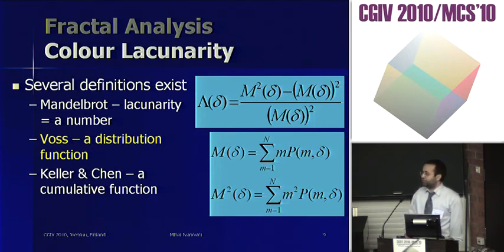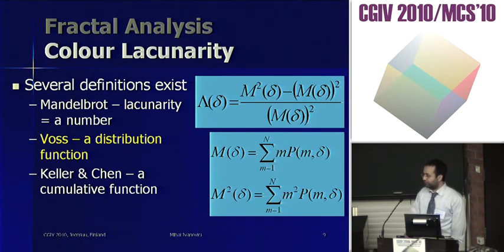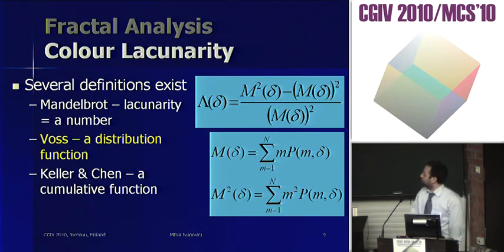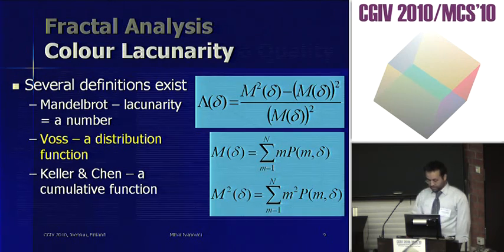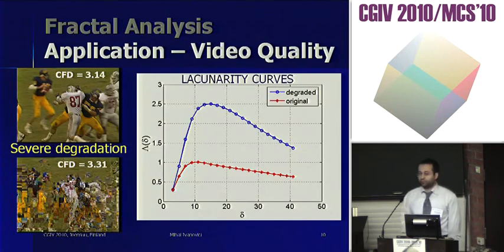Richard Voss also proposed a definition for lacunarity based on the same probability matrix. There exist several other definitions, starting with Mandelbrot's original one, but that definition yields just a single number. We prefer the distribution function proposed by Voss, which allows us to compute lacunarity for color images as well. Let's see some results in the context of video quality assessment.